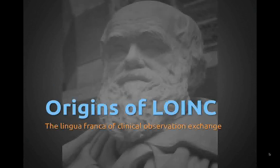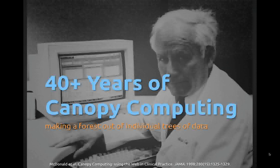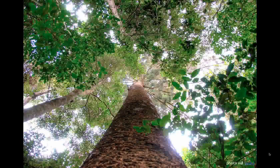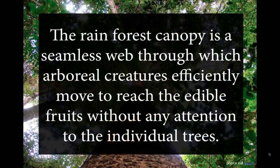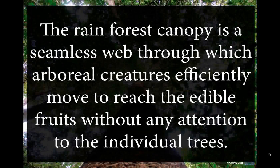The story starts about 40 years ago with Clem McDonald. When he came to Regenstrief, he had a vision of building computer systems connected to each other in a seamless fashion. He coined the term 'canopy computing' and described it in a JAMA paper in 1998 — the idea of creating computer systems that functioned like the rainforest canopy, a seamless network through which arboreal creatures can efficiently move to reach edible fruits without attention to individual trees. So the idea of connecting computer systems in an interoperable way was his vision.